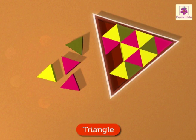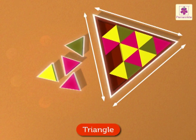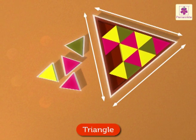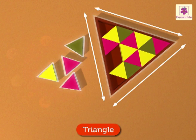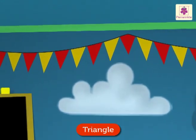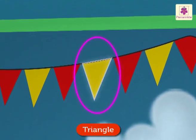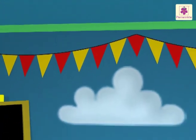A triangle is a three-sided figure. Look at the pieces of that puzzle — they are also triangle in shape. Now look at the pennants on the strings in the room; they are triangle in shape. They have made Pearl's room so colorful!